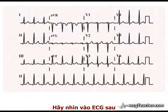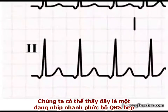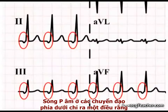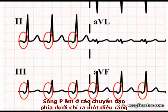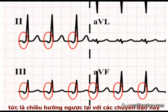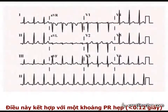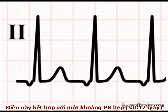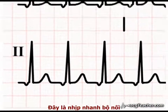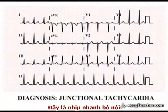Looking at this ECG, we identify a narrow complex tachycardia with a rate of 115 beats per minute. Negative P waves in the inferior leads indicate that the P wave axis is travelling superiorly, away from these leads. This, combined with an abnormally short PR interval, places the source of the depolarising discharge in the junctional region. This is a junctional tachycardia.